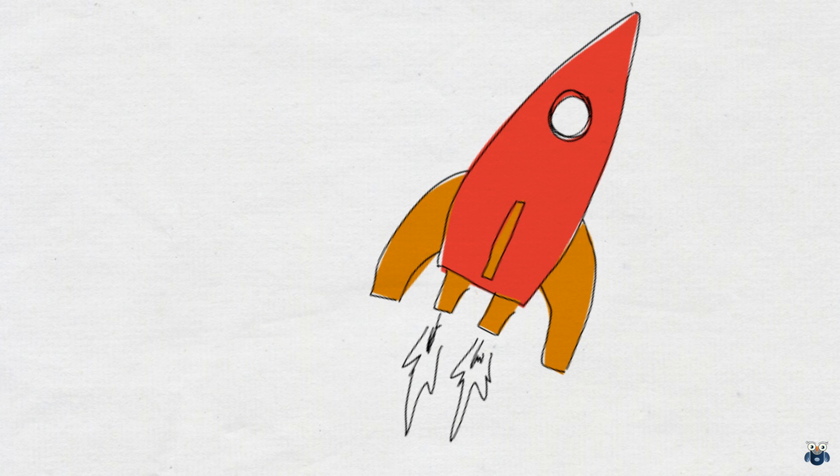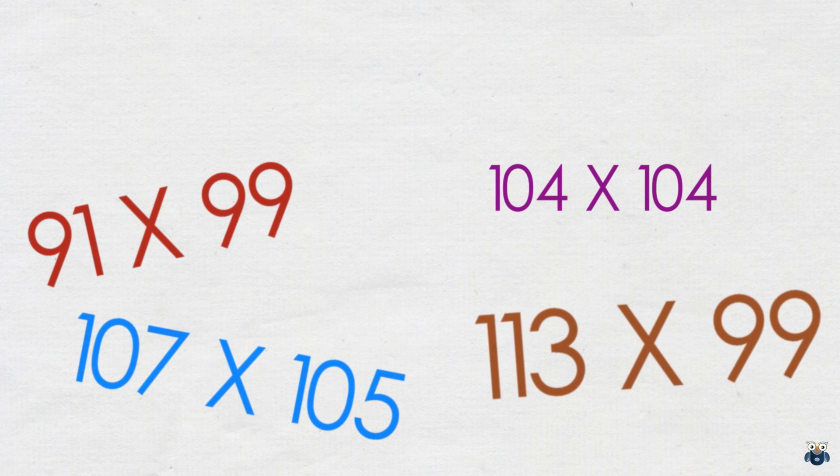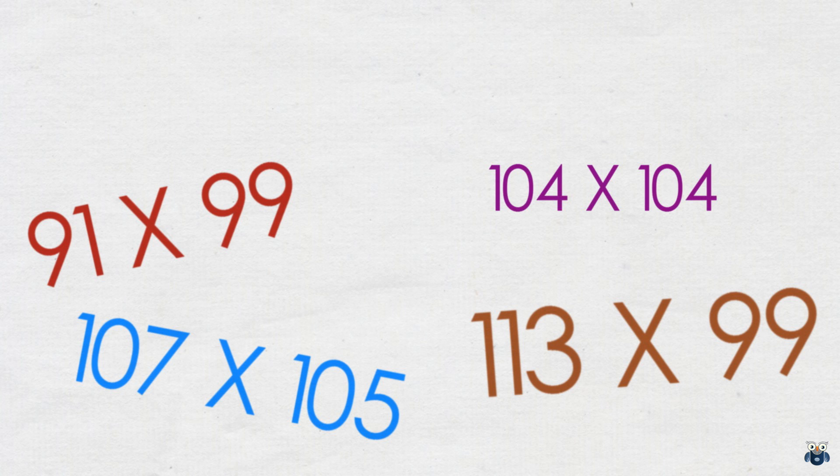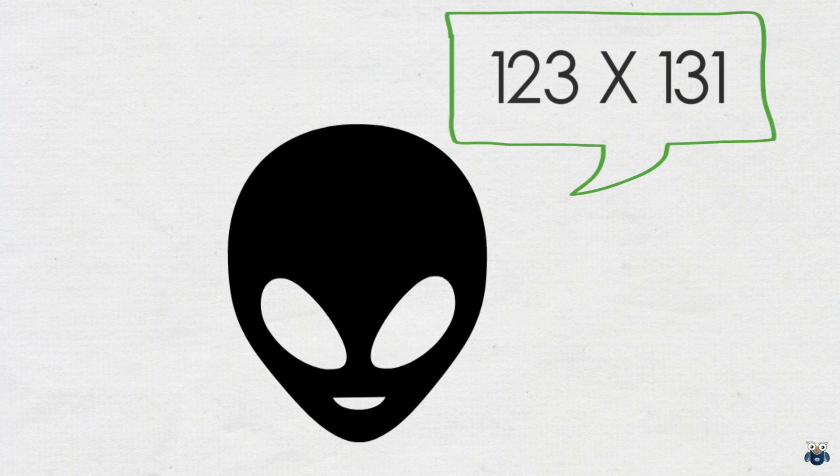But before we proceed it's important to understand when to apply this method. As I mentioned earlier this method is used to multiply numbers close to 100. Here are some examples. As you can see in all the above examples each number is close to 100. So could you apply this method also known as the base 100 method to this example? Yes you could. However the further away from 100 you go the more difficult the calculation gets. Please make a note of this.